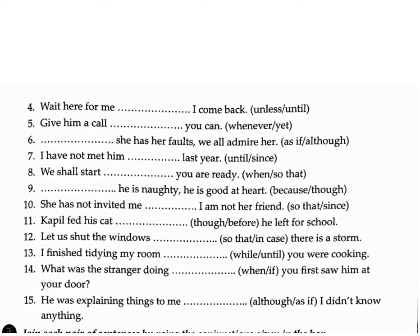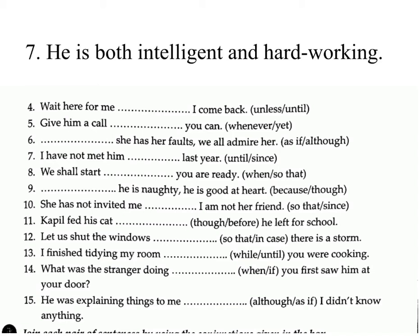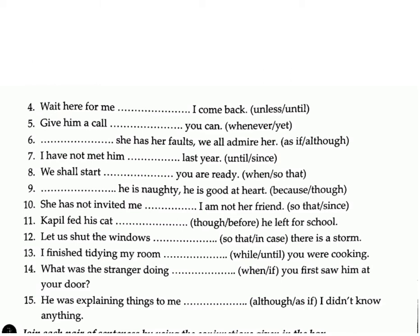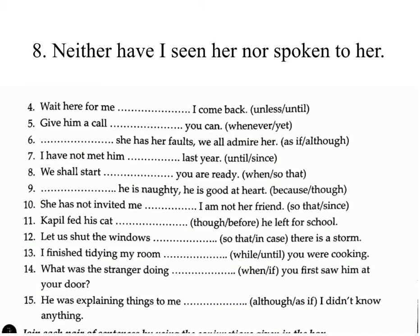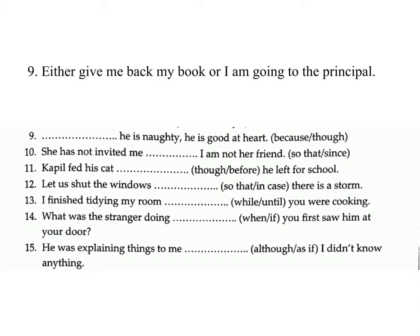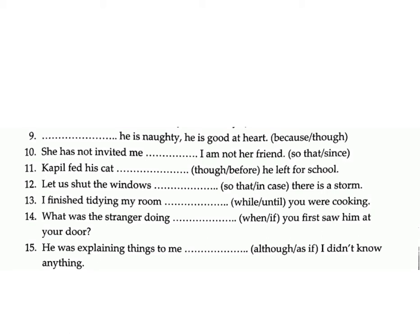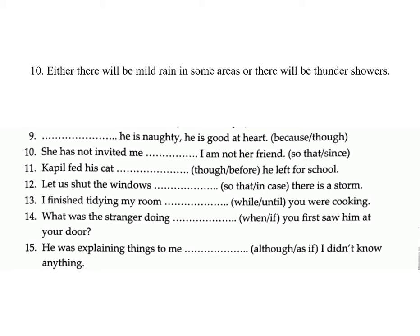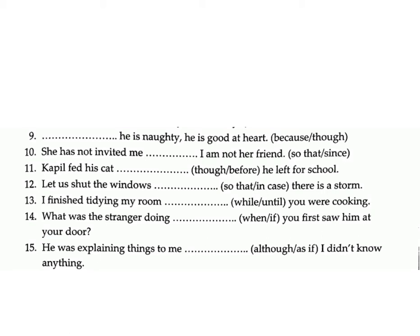Seven: 'He is intelligent / he is hard-working.' (not only...but also) Answer: Not only is he intelligent but also hard-working. Eight: 'I have not seen her / I have not spoken to her.' (neither...nor) Answer: Neither have I seen her nor spoken to her. Nine: 'Give me back my book / I am going to the principal.' (either...or) Answer: Either give me back my book or I am going to the principal. Ten: 'There will be mild rain in some areas / there will be thundershowers.' (either...or) Answer: Either there will be mild rain in some areas or there will be thundershowers.